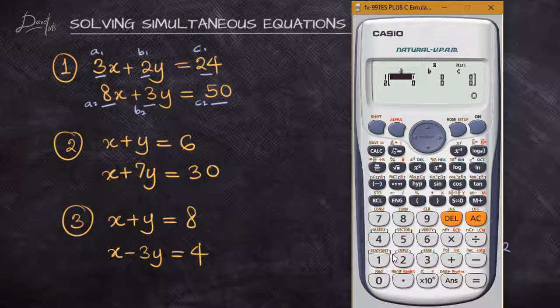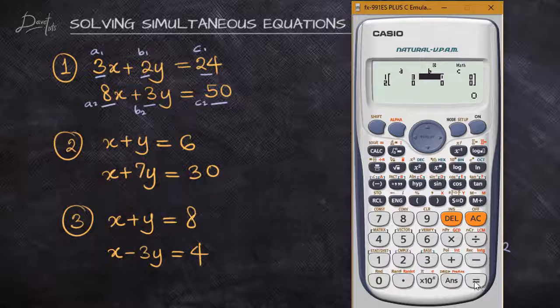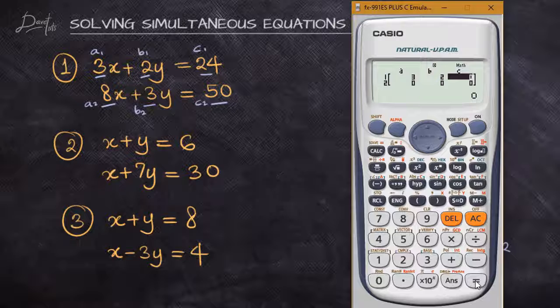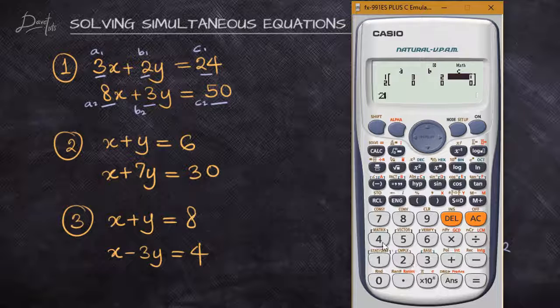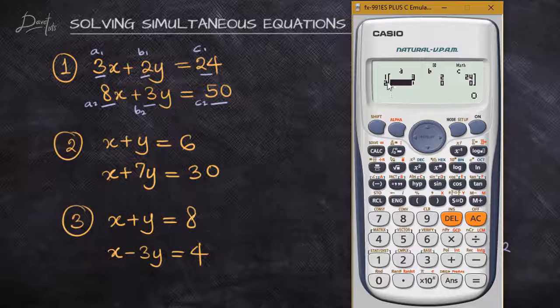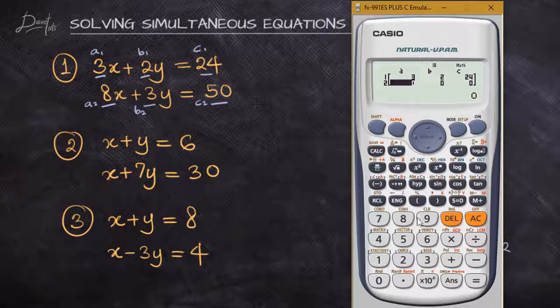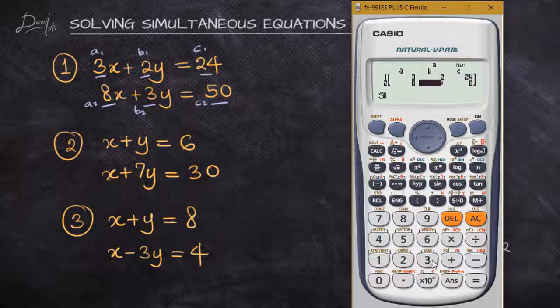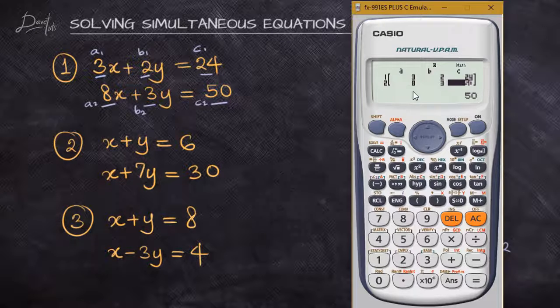a₁ will be corresponding to 3, and b₁ will be corresponding to 2, while c₁ will be corresponding to 24. Moving on from there, we can see that a₂ will correspond to 8, and then b₂ will correspond to 3, while c₂ will correspond to 50.